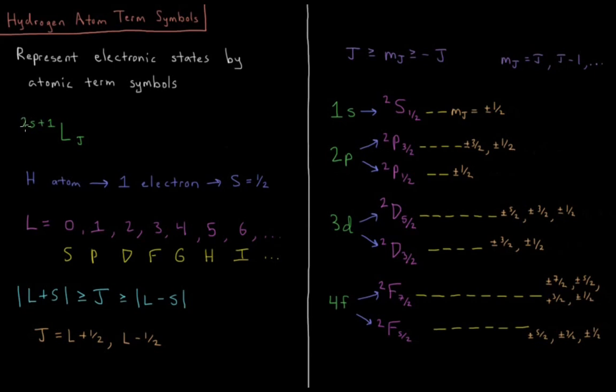For a single electron, s equals 1 half, so 2s plus 1, which is called the multiplicity, is going to be 2. 2 times 1 half plus 1 is 2.